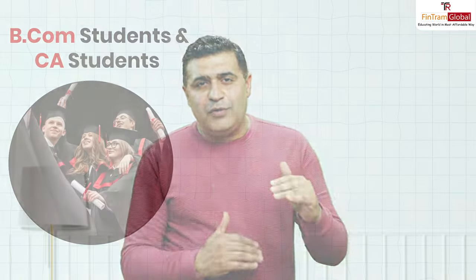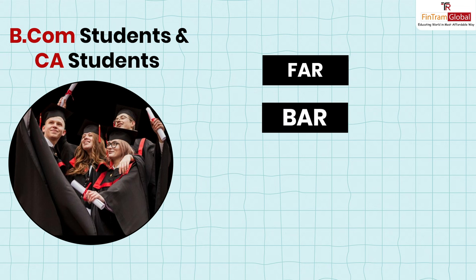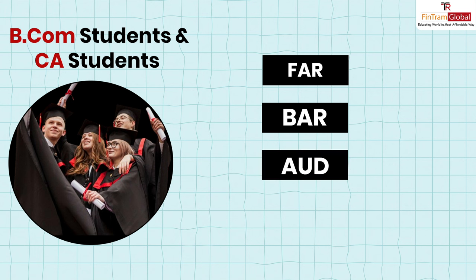The ideal scenario for a BCom or CA student is: take FAR first, then think about the second subject. If you have an inclination towards Financial Accounting and Reporting, you should look at BAR as the second subject, since BAR is effectively an extension of many concepts covered in FAR — about 50% of BAR's component is related to FAR. So if you have done FAR and have an inclination towards it, choose BAR second, and then the third subject should be Audit.